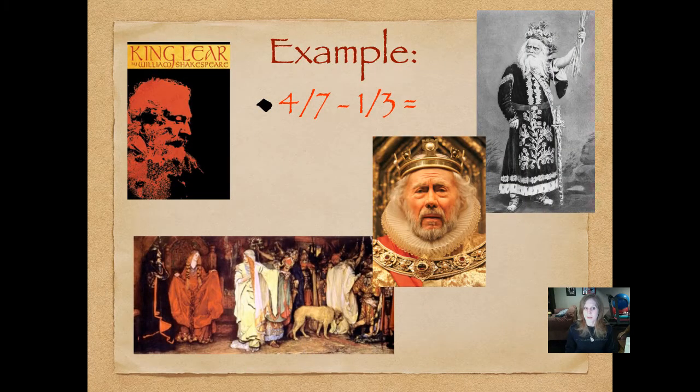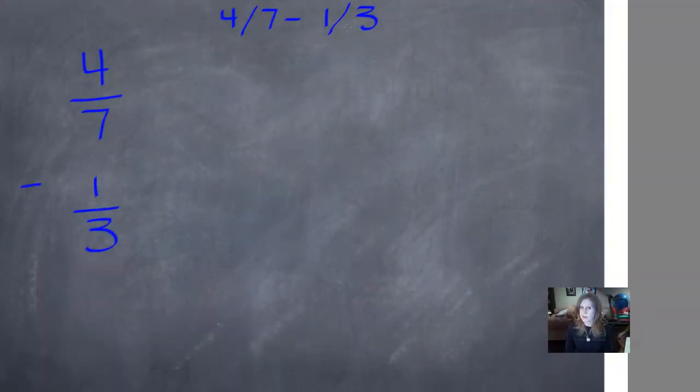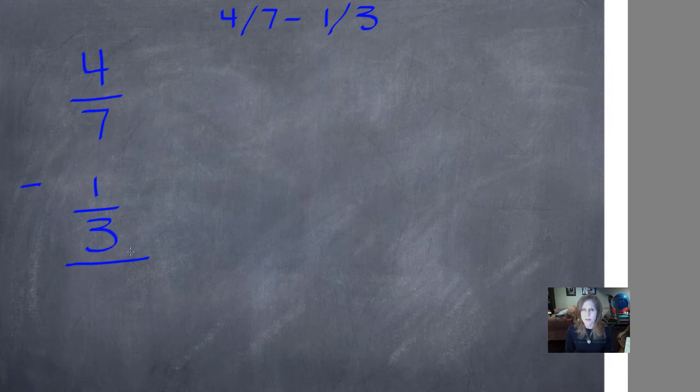Here is our example. Four sevenths minus one third. Remember, I'm writing them horizontally here, but when you write them out, I want you to be writing them vertically as I write them on the bamboo tablet. I wrote the four sevenths vertically on top, and then I wrote one third on the bottom. The next step is to make a cake and find denominators that are the same, because without that least common denominator or least common multiple, we can't subtract these numbers because the pieces are different sizes.